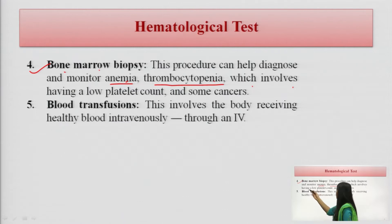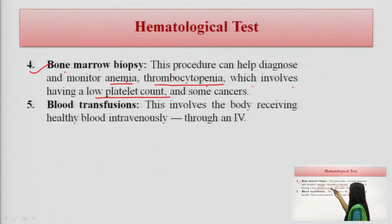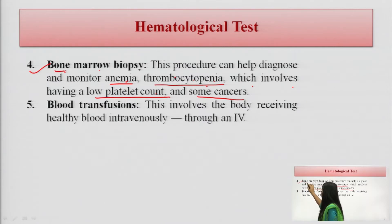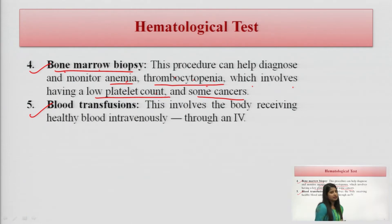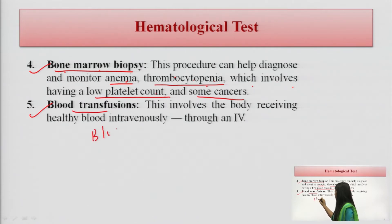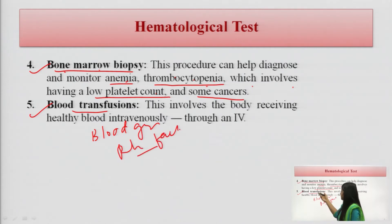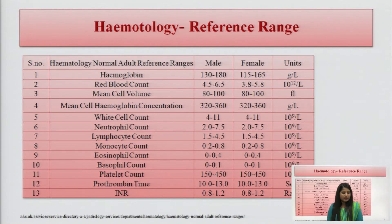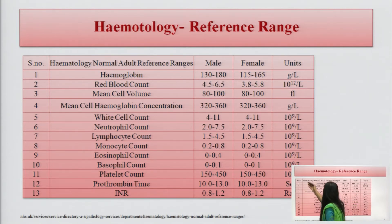Bone marrow biopsy is used when damage is suspected — in conditions such as anemia, which means lowering of RBC levels, and thrombocytopenia, which means lowering of platelet levels. It is also evaluated in cancer patients. Hematology testing is also performed for blood transfusion — to determine a patient's blood group and Rh factor.